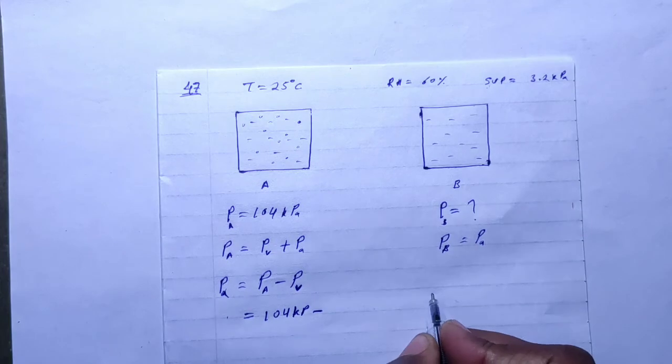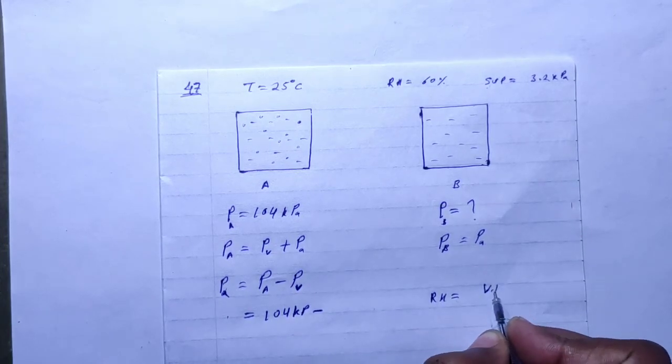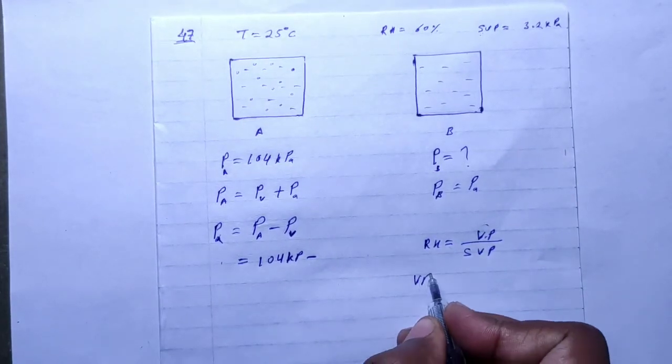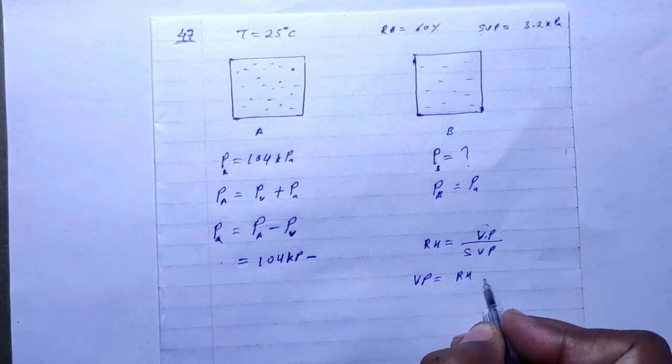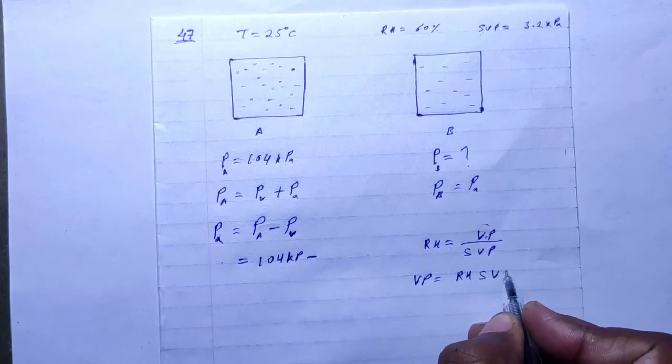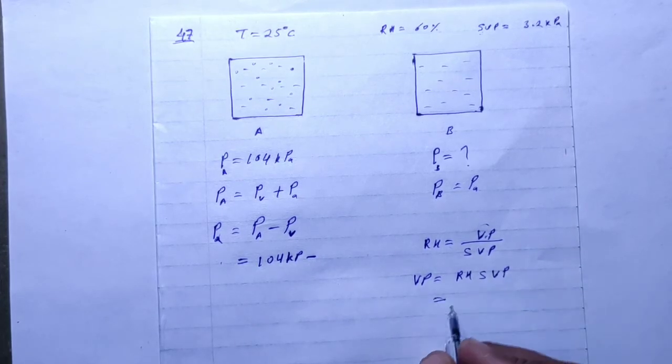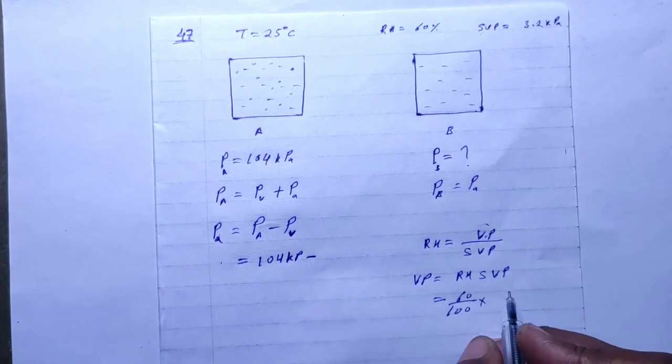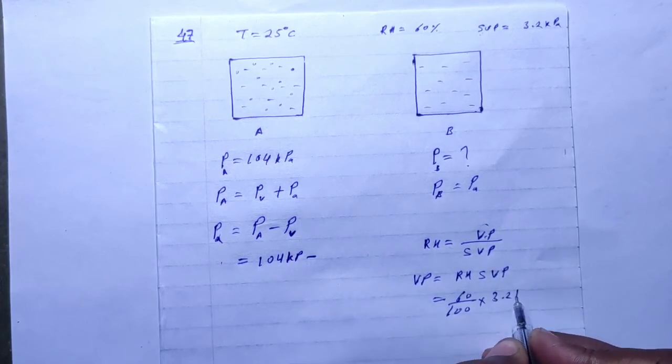Considering the vapor pressure formula: vapor pressure equals relative humidity times saturated vapor pressure. Relative humidity is 60 percent, so 60 by 100, and saturation vapor pressure is 3.2 kPa.